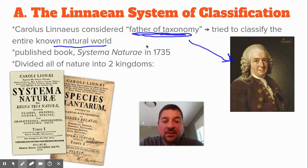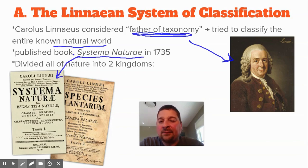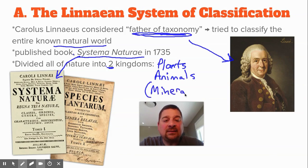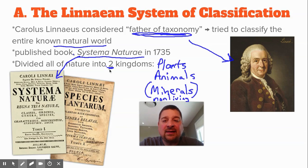He tried to take everything — all the plants, animals, fungi, everything we knew of — and he wrote a book, Systema Naturae, which you can see a copy of down here, on which he tried to classify all of the living things that we know of. He divided nature, the living stuff, into two kingdoms: plants and animals. There was kind of a third kingdom listed sometimes, which would be minerals, but this was the non-living stuff. So a lot of times we just say he divided all of the living stuff into two kingdoms, plants and animals, and you fell into one of those two categories.